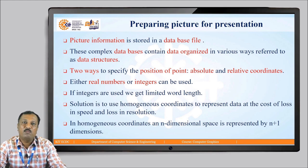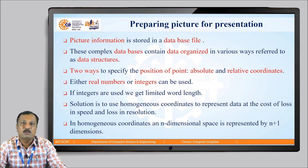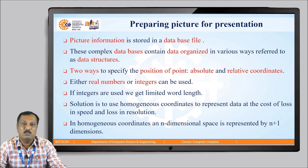The second step of generating computer graphics is preparing the picture for presentation. In this step, picture information is stored in a file called a database file. These complex database files contain data organized in various ways, which we usually refer to as data structures. The position of a point can be represented in two ways: either by using absolute coordinates or relative coordinates. Absolute coordinates are specified with respect to the origin (0,0) of the coordinate axis, whereas relative coordinates are specified with respect to the previous known position. These coordinates, both absolute and relative, can be represented using real numbers or integers.